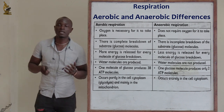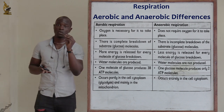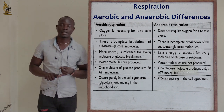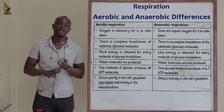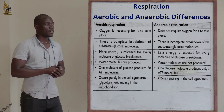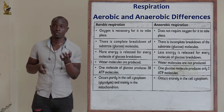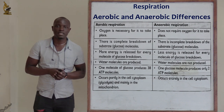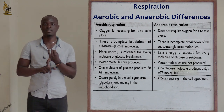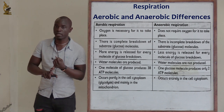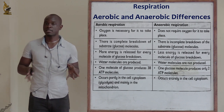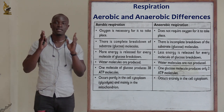In aerobic respiration, there are two phases: the first phase is glycolysis and the second phase is the Krebs cycle. Anaerobic respiration does not have phases — it is a single phase. Regarding location, aerobic respiration takes place in the cytoplasm and in the matrix of the mitochondrion, while anaerobic respiration only takes place in the cytoplasm.